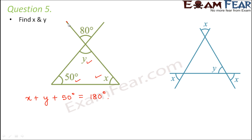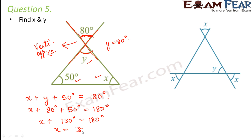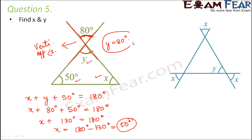Now, looking at this scenario, you see two lines intersecting each other. y and 80 degrees are vertically opposite angles, and vertically opposite angles are always equal, so y is equal to 80 degrees. Substituting into the equation: x plus 80 plus 50 equals 180, so x plus 130 equals 180, giving x equal to 50 degrees.